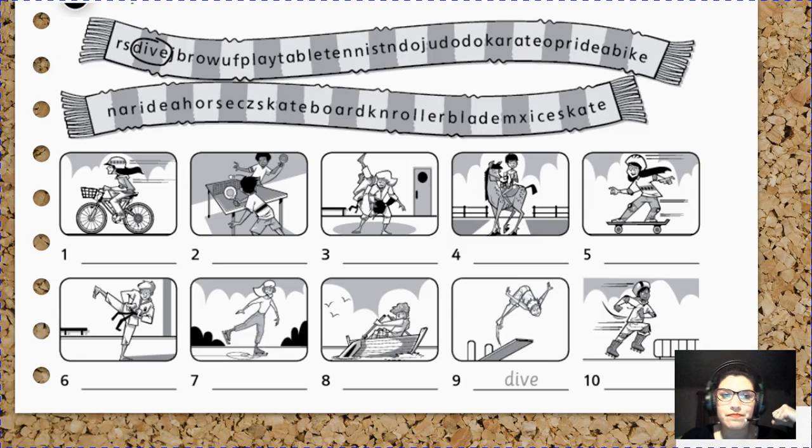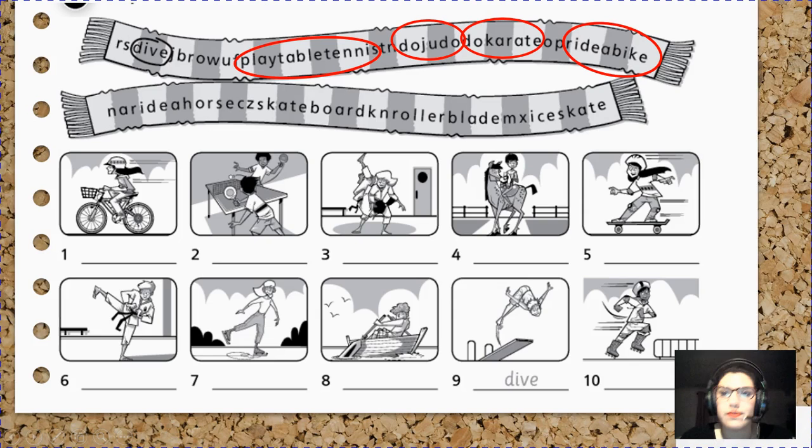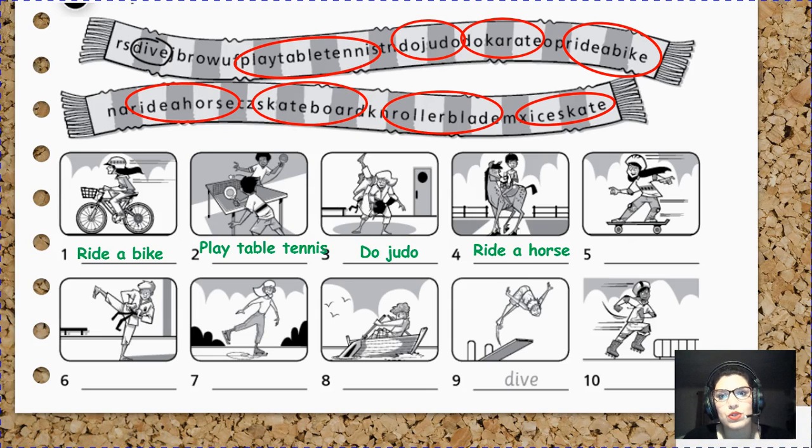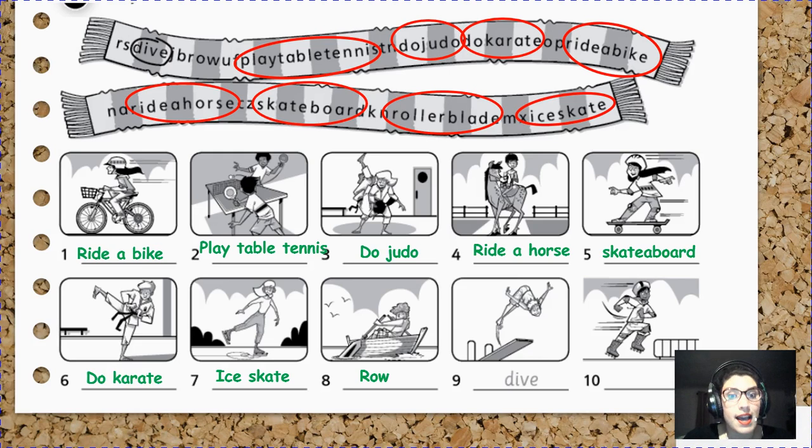So we have dive, play table tennis, do judo, do karate, ride a bike, ride a horse, skateboard, and ice skate. Then you have to write the names: ride a bike, play table tennis, do judo, ride a horse, skateboard, do karate, ice skate, roll, and dive. Excellent.